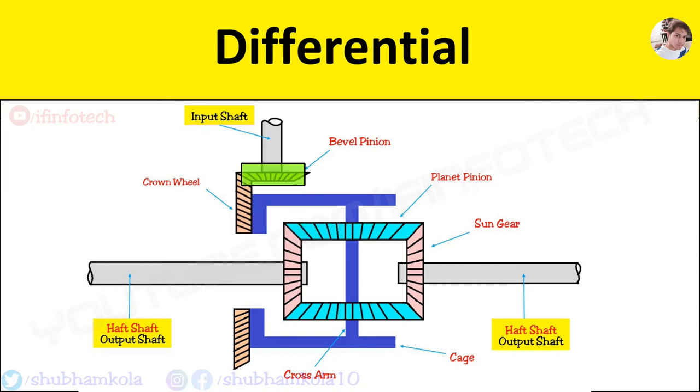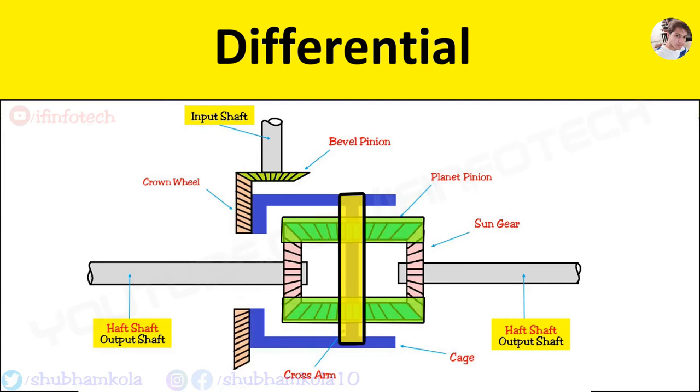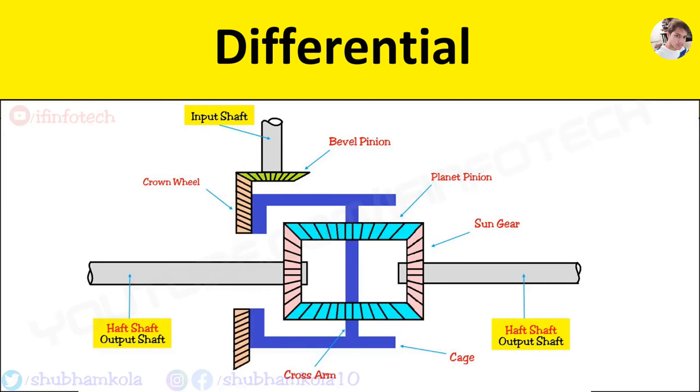Now you see the operation. Pinion is driven by propeller shaft rotates the crown wheel. As differential cage is fastened to crown wheel, it rotates the cage. When the differential cage rotates, bevel pinion and cross arm rotate. The motion of bevel pinion is around the axis of half-axle shaft. Hence bevel pinion is called as planetary gear.